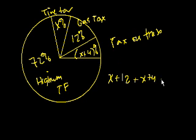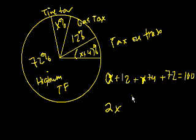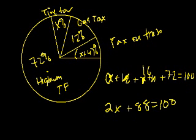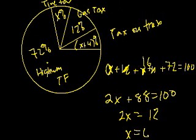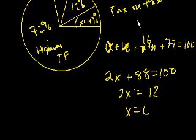x plus 12 plus x plus 4, plus 72, have to equal 100%, right? We have two x's. And then what does this equal to? 12 plus 4 is 16. 16 plus 72 is 88. 2x plus 88 is equal to 100. And then you have 2x is equal to 12, x is equal to 6. And that's exactly what we're looking for. The tire tax. So that's 6%. And that's choice B.